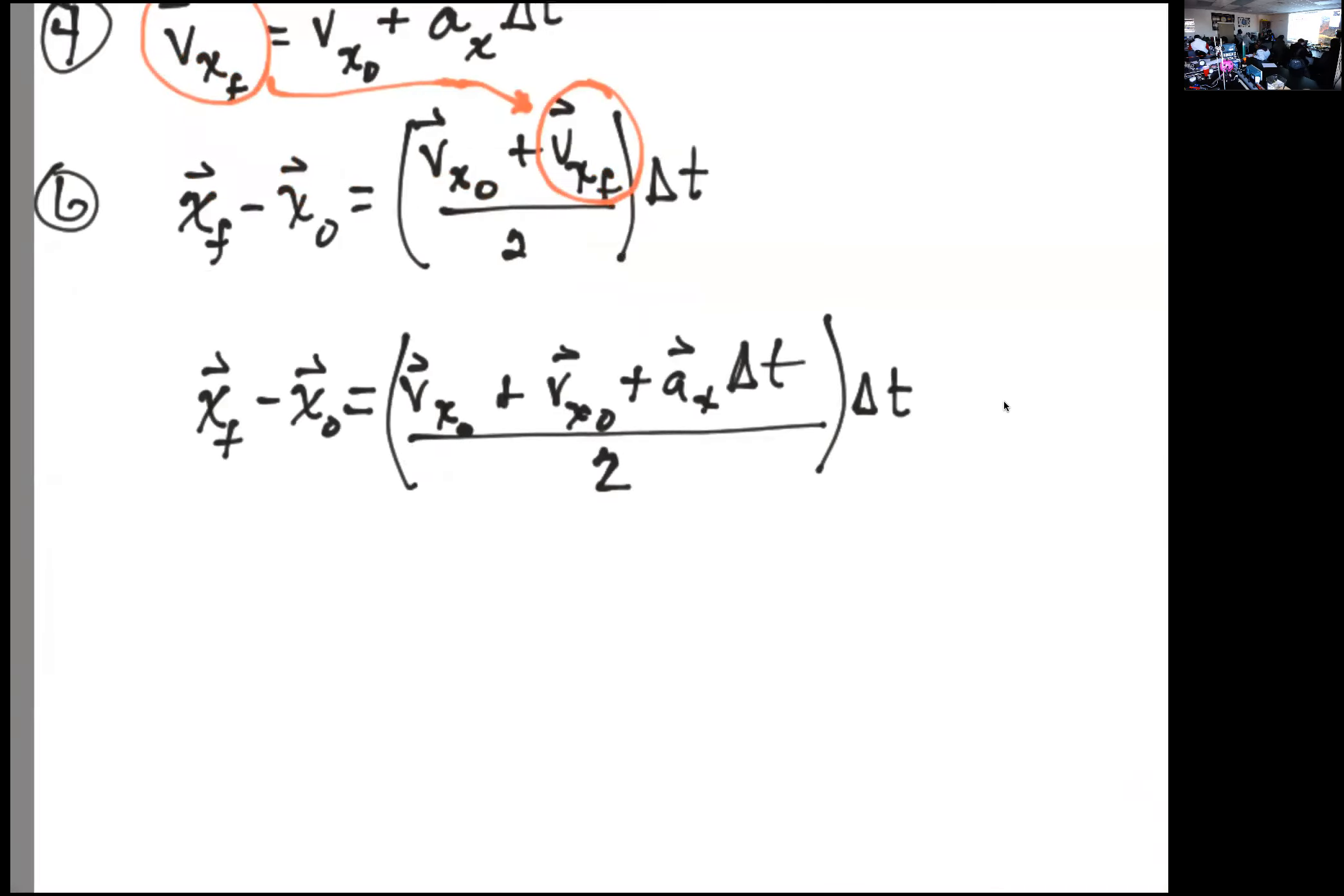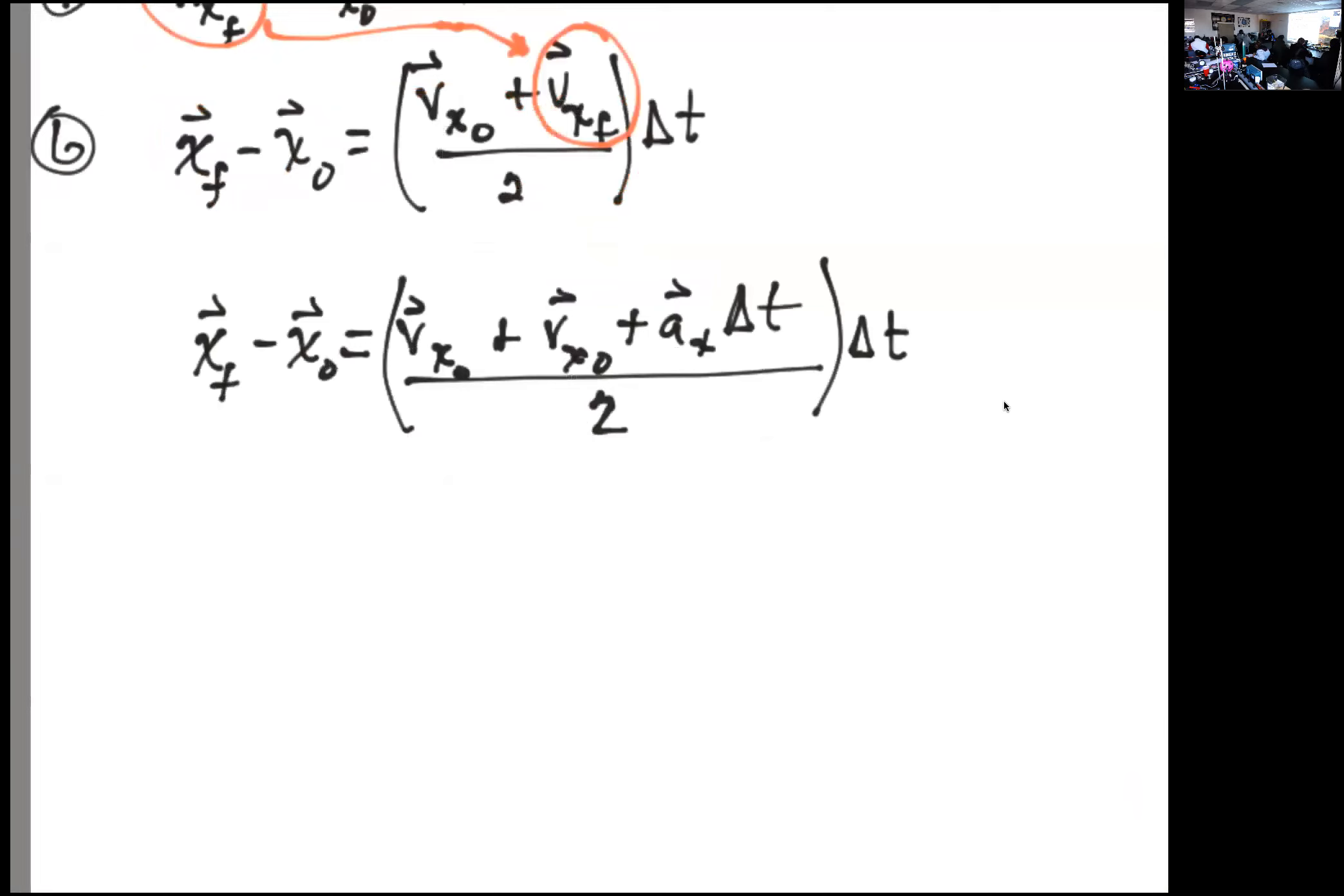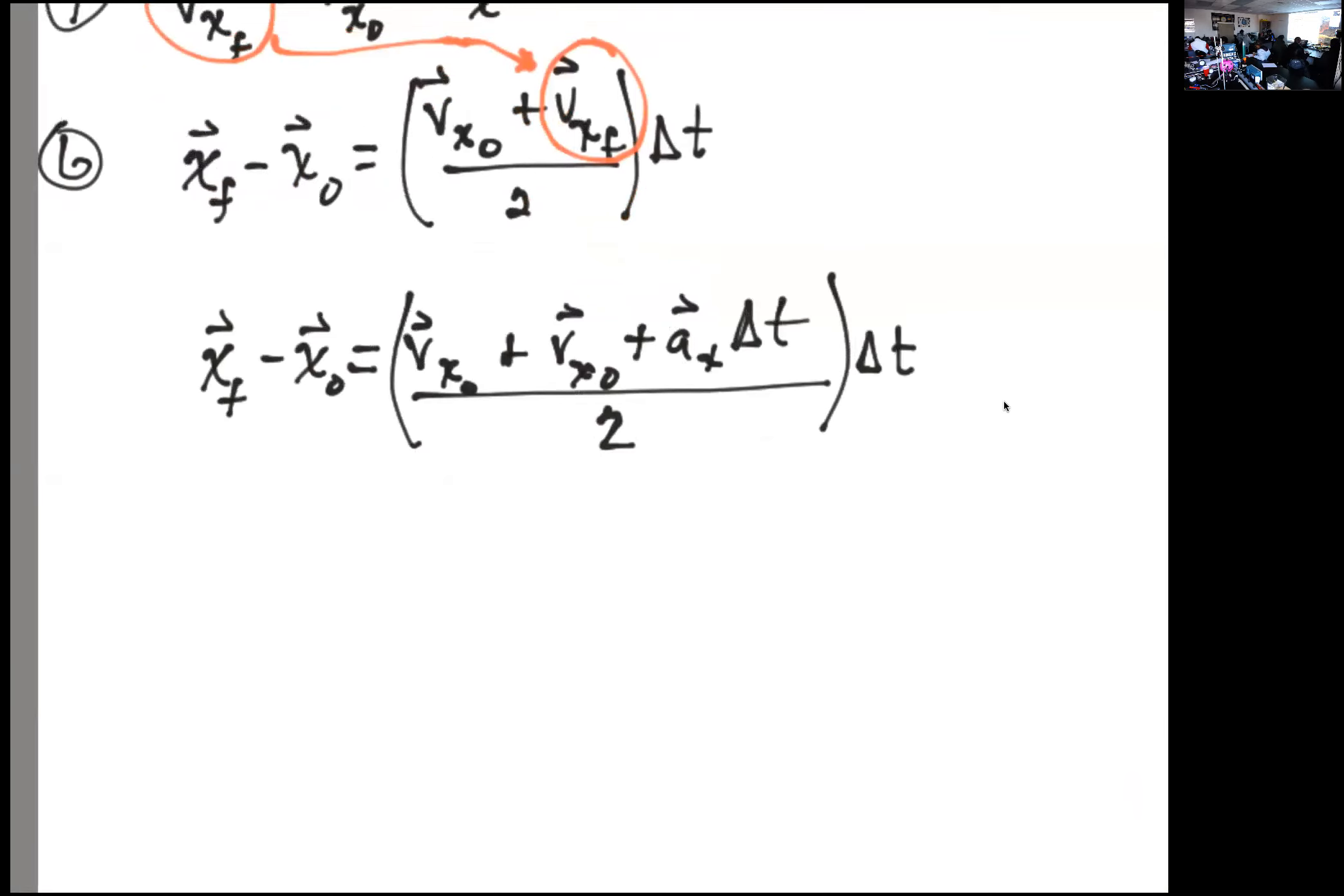So now we need to simplify this and we end up with 2VX naught plus AX times delta T all over 2. I'm going to go ahead and square this and put a delta T right here as well.